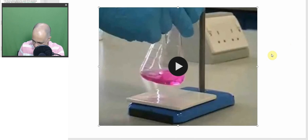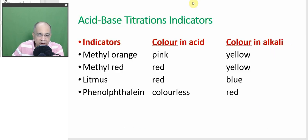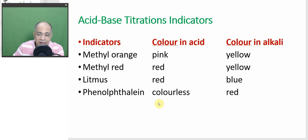For acid-base titrations, we normally use the following indicators: methyl orange, which gives a pink color in acid and yellow in alkali; methyl red, which gives red in acid and yellow in alkali; litmus, red in acid and blue in alkali (though hardly used for laboratory titrations); and phenolphthalein, which is colorless in acidic medium and pink in alkaline medium. These are common acid-base titration indicators.